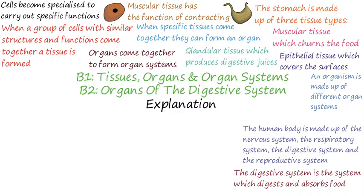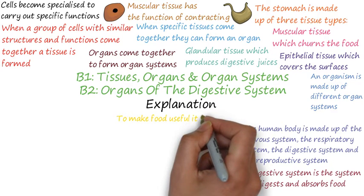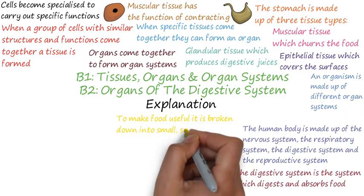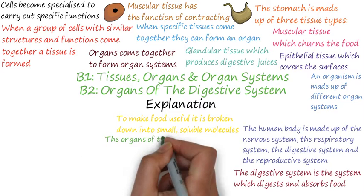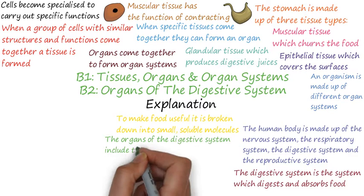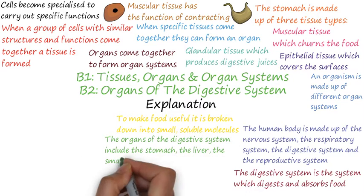We are going to look at the digestive system in a bit more detail. The digestive system is the system in which organs work together to digest and absorb food. The digestive system exchanges materials with the environment. The food you eat is not very useful to your body. To make the food useful it is broken down into small soluble molecules by the digestive system.